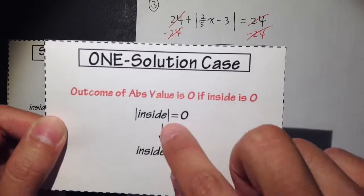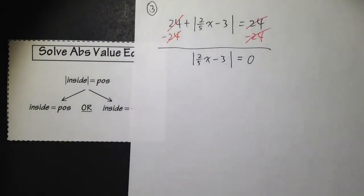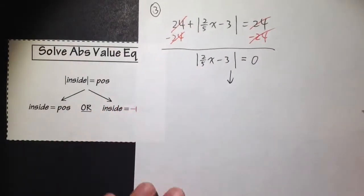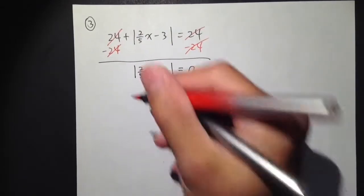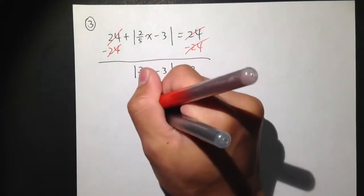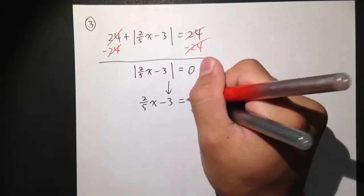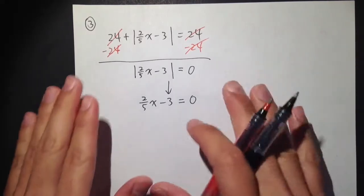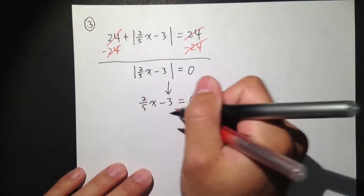What we need to do is just make the inside equal to 0. The inside does not change, so we get 2 over 5x minus 3 is equal to 0. We don't need to do two different parts, because positive 0 and negative 0 are going to be the same. So, 2 over 5x minus 3 is equal to 0.